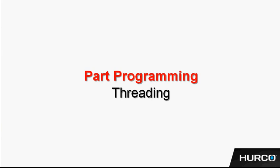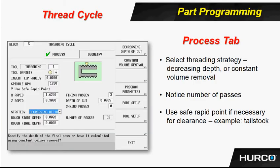Let's take a look at the threading block. Here we see a screenshot of the threading cycle screen. The very top section is very similar — you're going to enter in the tool number. It's going to bring in the information from the offset screen such as the orientation, tip radius, and so forth.